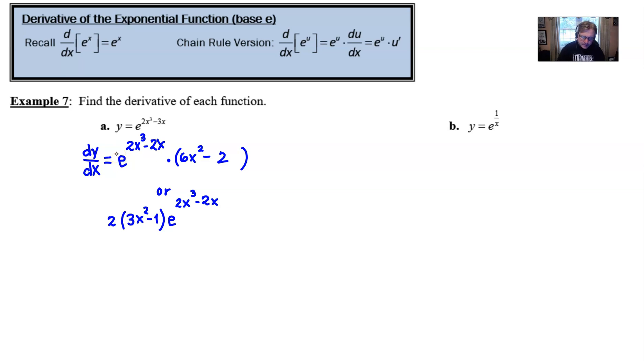Taking a look at part B for this problem, y equals e to the 1 over x power. What I might suggest with this first is you rewrite the 1 over x as you traditionally would. And that would be as x to the negative 1 power.